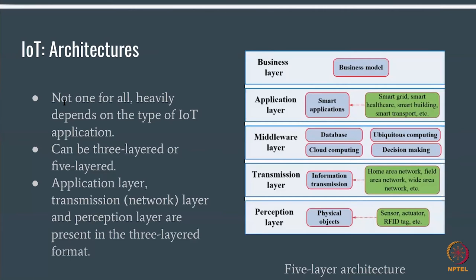A shallow IoT application can have just three layers of architecture, while a detailed one can have five layers. Looking at the five-layer architecture from the bottom: the perception layer deals with physical objects — all kinds of sensors, actuators, RFID tags, phones, Fitbits. Anything can act as a sensor. The perception layer addresses what exists, what can talk to each other, their kind, battery needs, how to read data from them, and how to send data back.